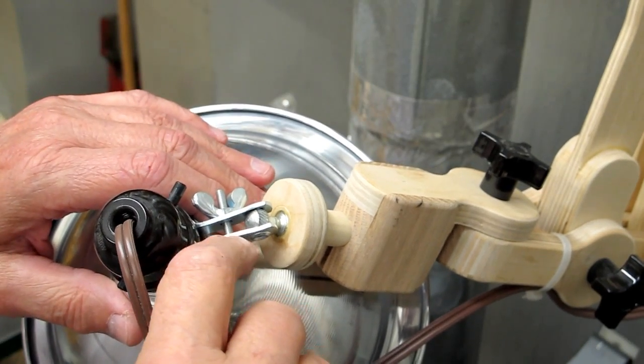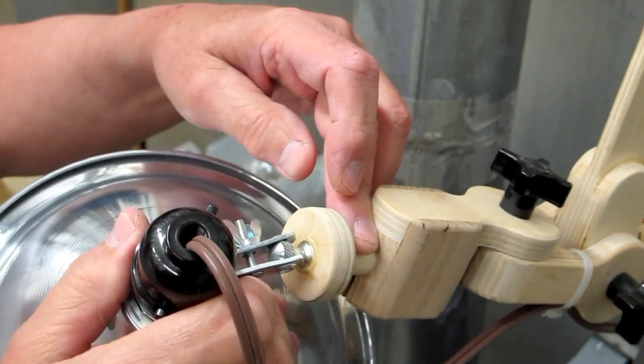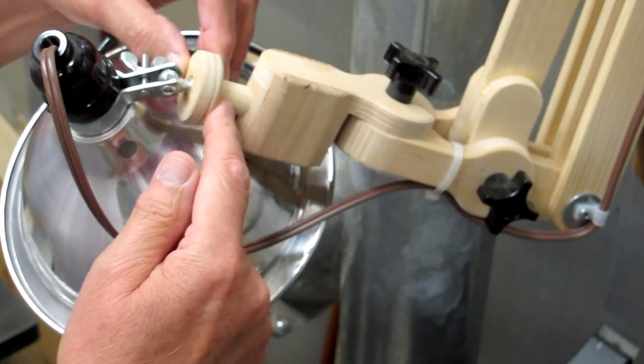On this particular light, this little ball joint was part of the original lamp assembly. I took that off and glued it into this wooden doll.